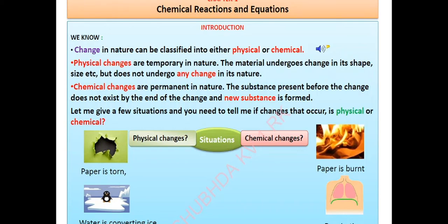Suppose you and your friend have a piece of paper. You tear the paper and your friend burns it. Now let's take the first situation. When paper is torn, it changes to tiny bits of paper, and the nature of the substance remains the same.